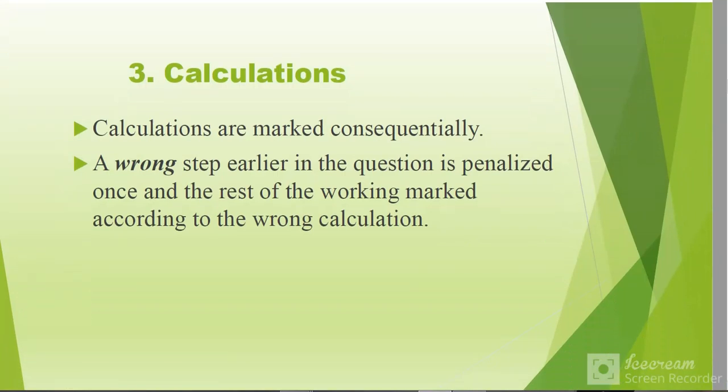Calculations are marked consequently. A wrong step earlier in the question is penalized once, and the rest of the working is marked according to the wrong calculation. If you transfer the wrong calculation to the next step, it will be marked correct. So if you get the first answer wrong that was required to be used in B, and you use that wrong answer in B, you are going to score your marks.